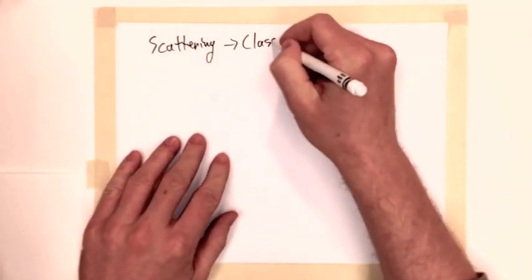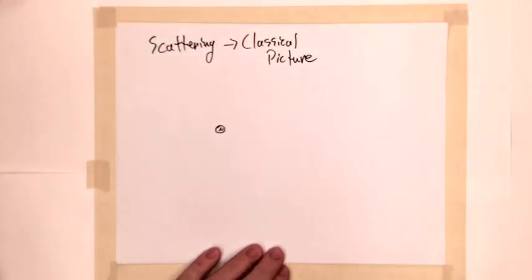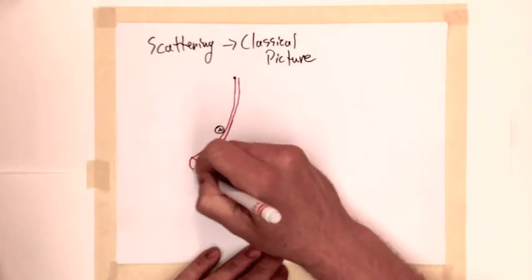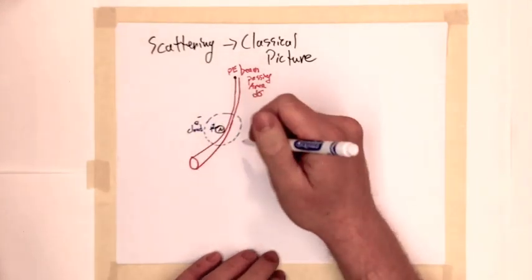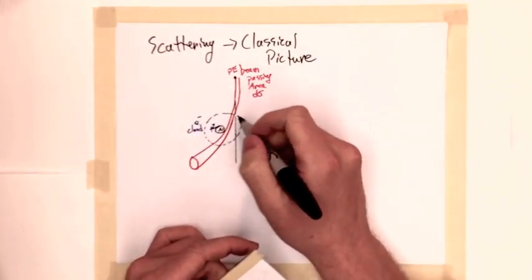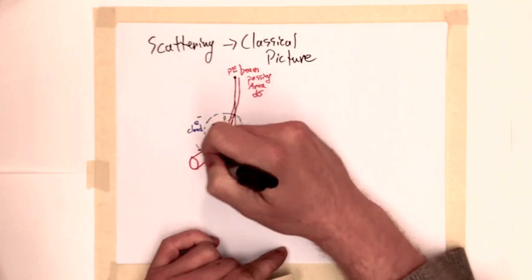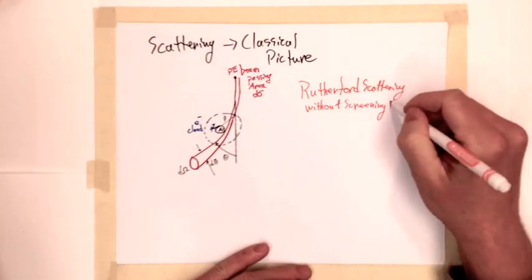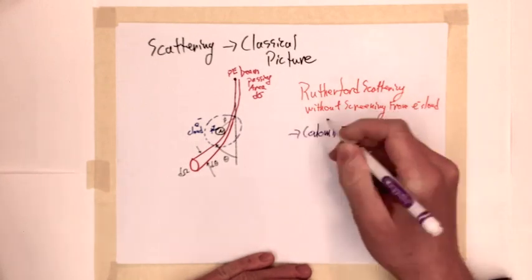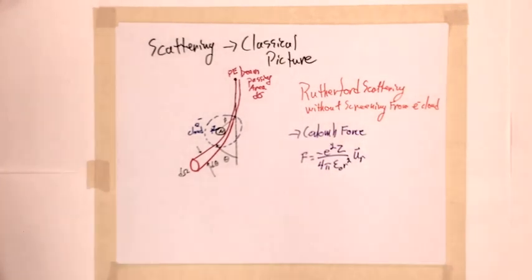The primary forces at work in electron backscattering are described by charged particle interaction between the nucleus of sample atoms and the incident electron. In the classical picture, we can treat the electron as a small particle incident on the nucleus that experiences a force given by Coulomb's law. For our application, we want to find the distribution of electrons after interacting with the nucleus, called the scattering cross-section.